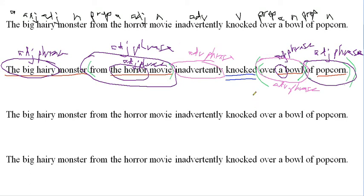Take a moment if you need to pause the video, take a look at it, and see what you got. We'll look at subordinate clauses. Remember what I told you — we won't have any subordinate clauses until I let you know. So we're going to put 'no subordinate clauses.'